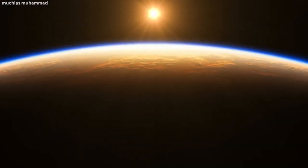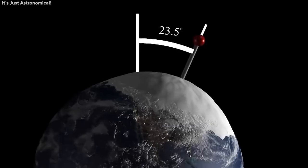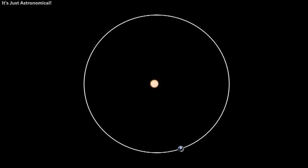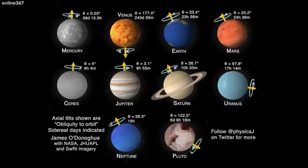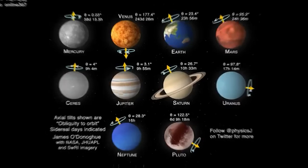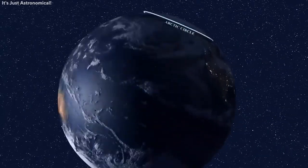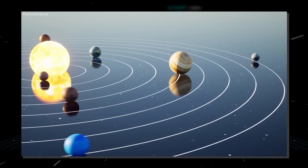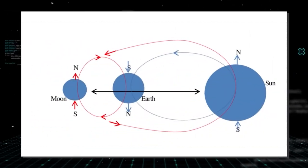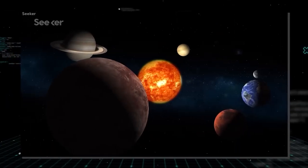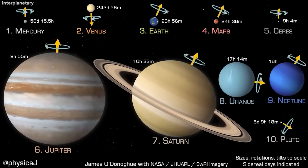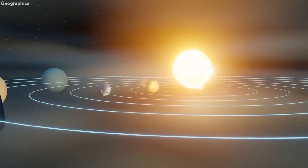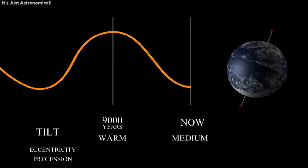What drives the Milankovitch cycles? The amount of sunlight reaching our planet's outer atmosphere is determined by three factors: the tilt of Earth's axis toward the orbital plane; the eccentricity of its orbit, or how elliptical the orbit is; and the so-called precession of the planet's axis — as Earth spins, its axis slightly wobbles, pointing in different directions over time like a spinning top. The gravitational forces of other planets, the sun, and Earth's moon all have an effect on these parameters.